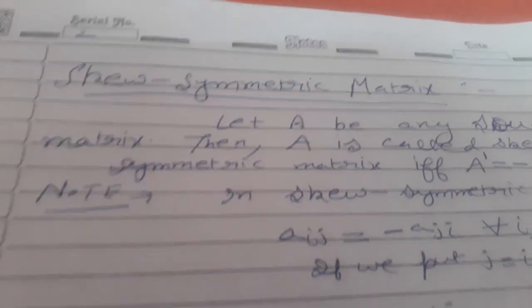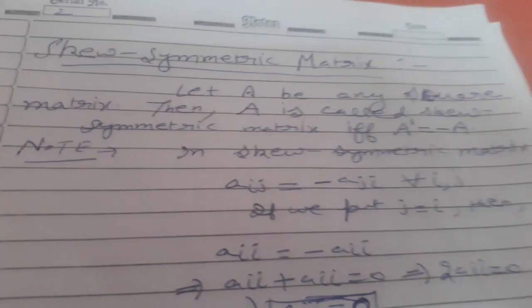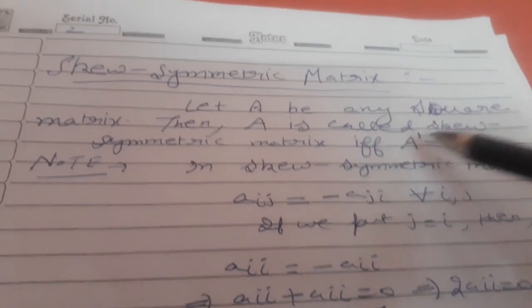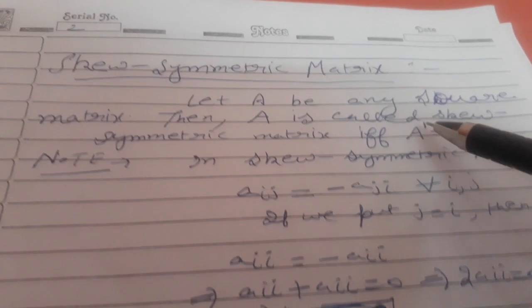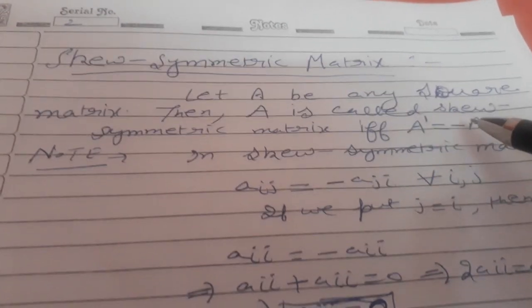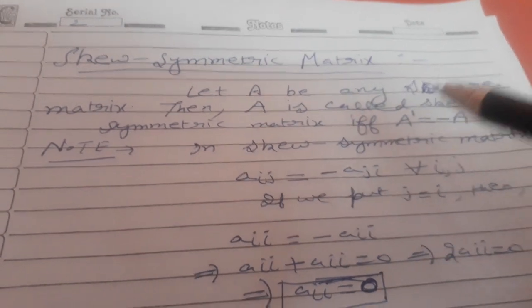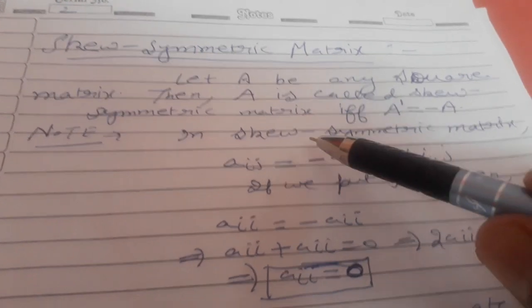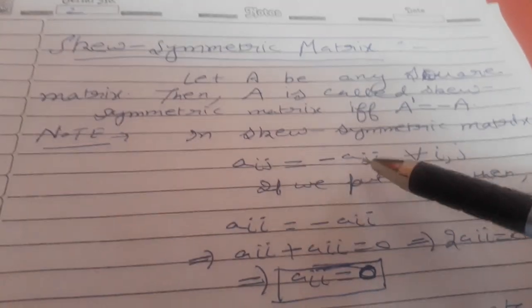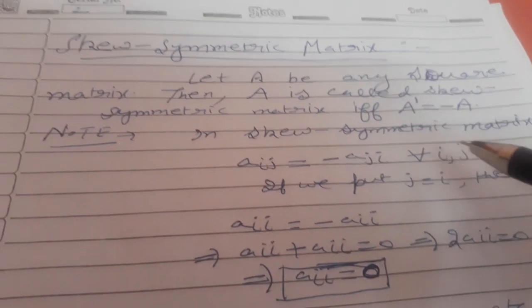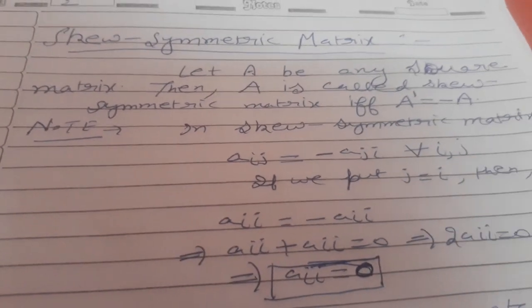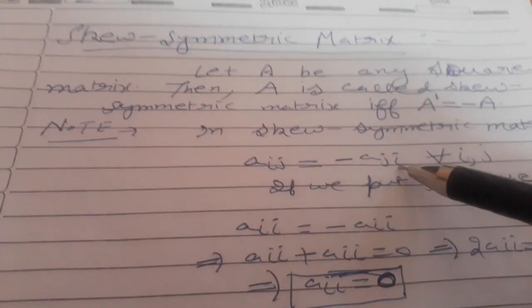Next type is skew-symmetric matrix. Let A be any square matrix. Then A is called a skew-symmetric matrix if and only if A transpose equals minus A. In skew-symmetric matrix, Aij equals minus Aji for every i, j — whereas in symmetric matrix, Aij equals Aji.